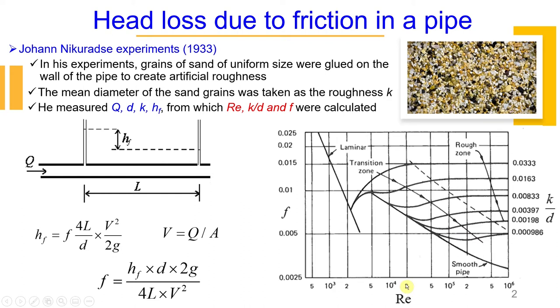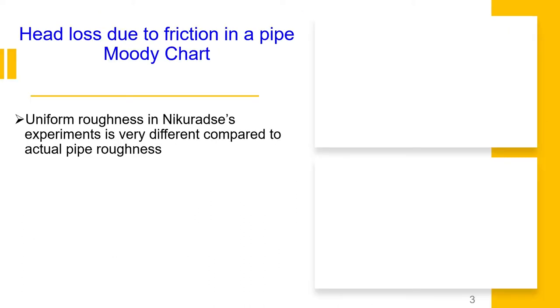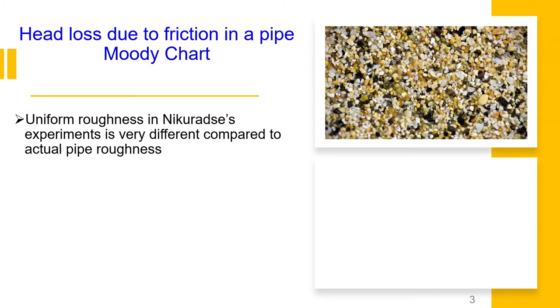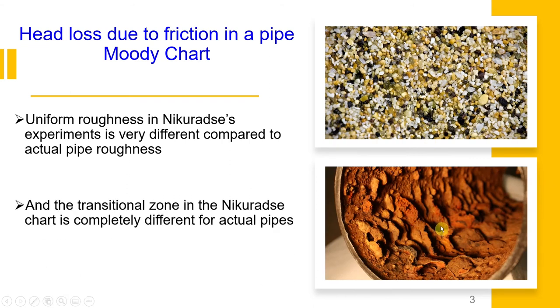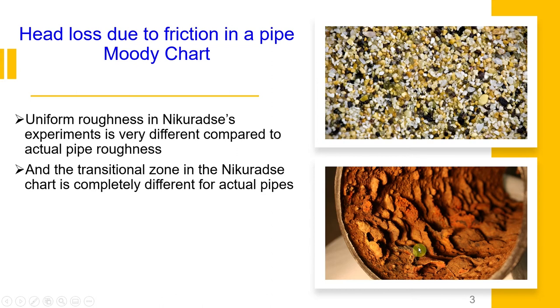Uniform roughness that Nikuradse used in his experiments is very different compared to actual pipe roughness. So this is roughness that he used in his experiments, and this is actual pipe roughness. It's quite different. Therefore, transitional zone in the Nikuradse chart is quite different from transitional zone for actual pipes.